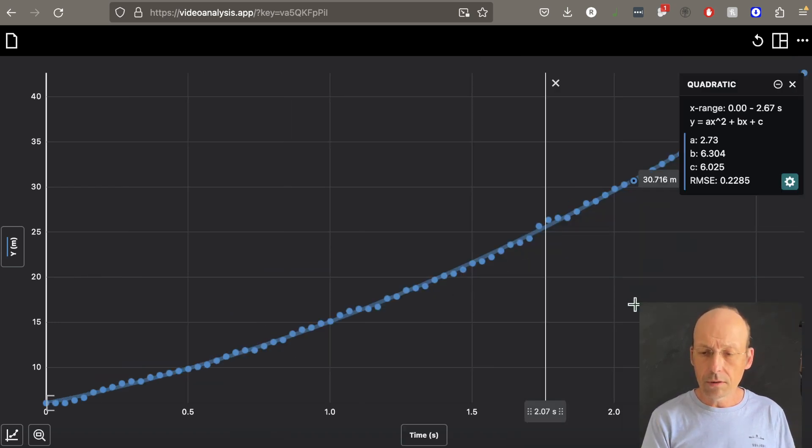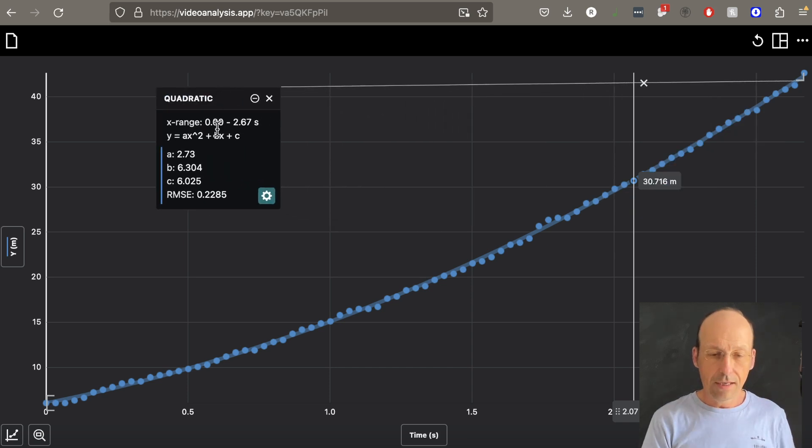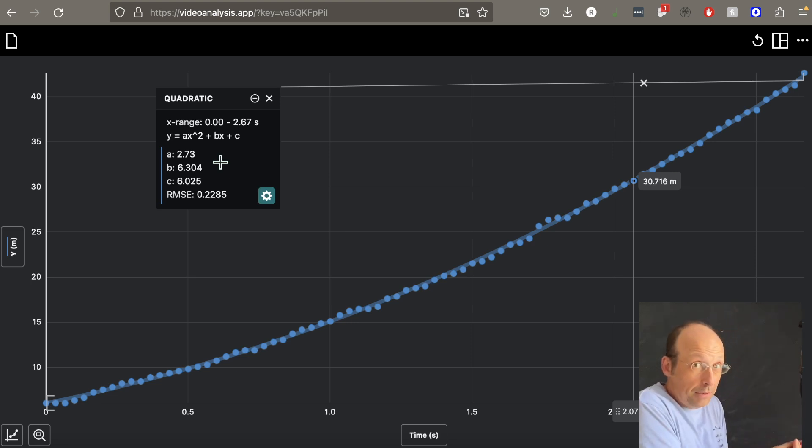So now I have this fit and you'll notice the A value is 2.73. That would give an acceleration of 5.2 meters per second squared, which is pretty much the same as tracker video analysis. Now they're the same.